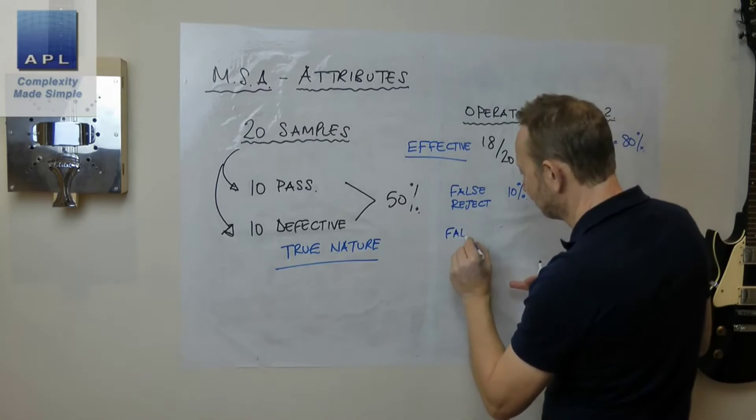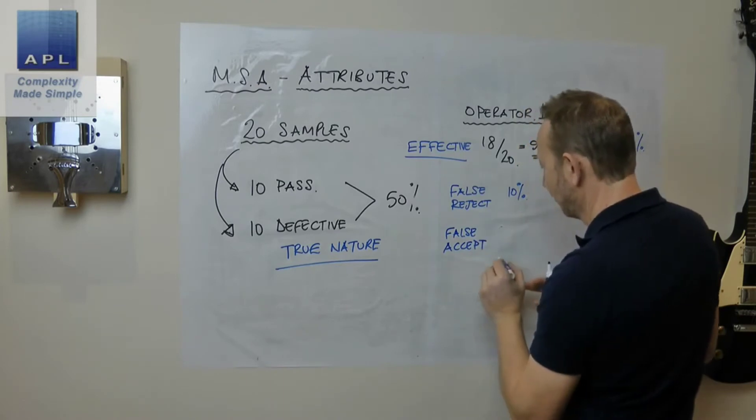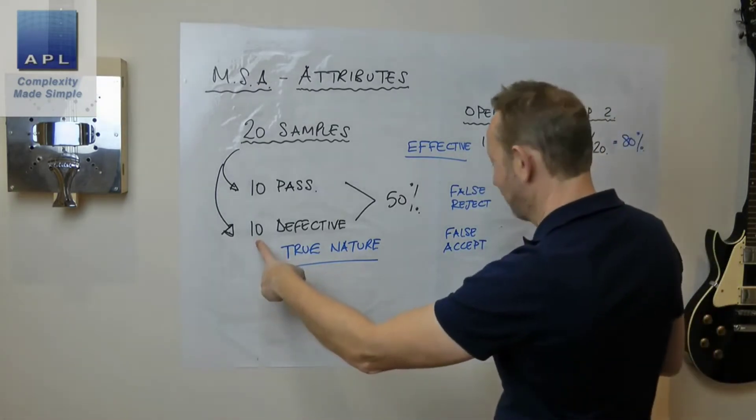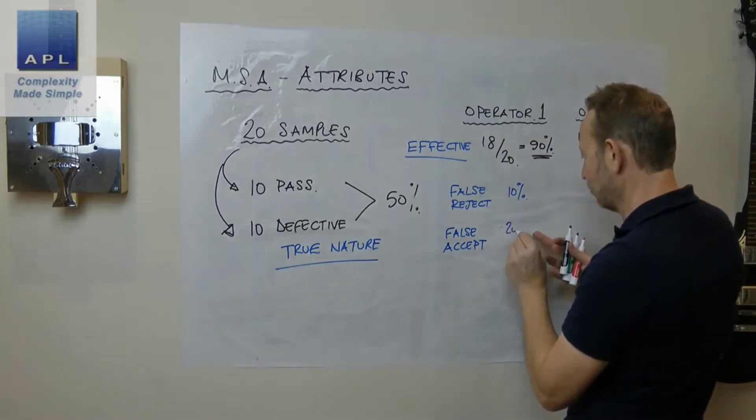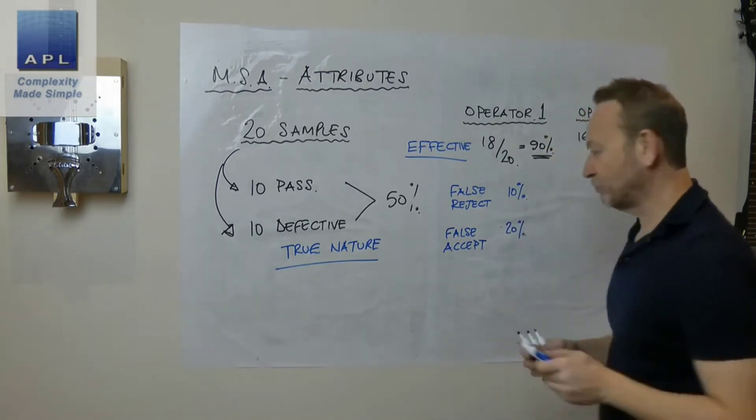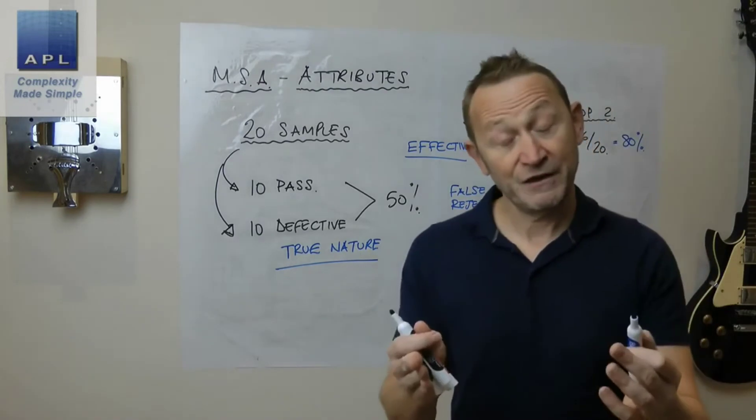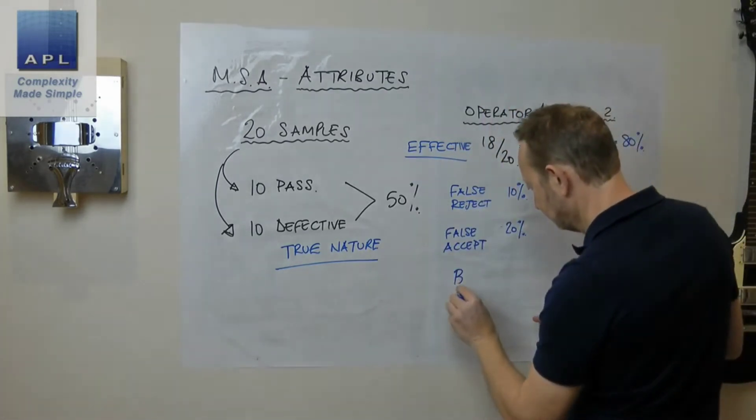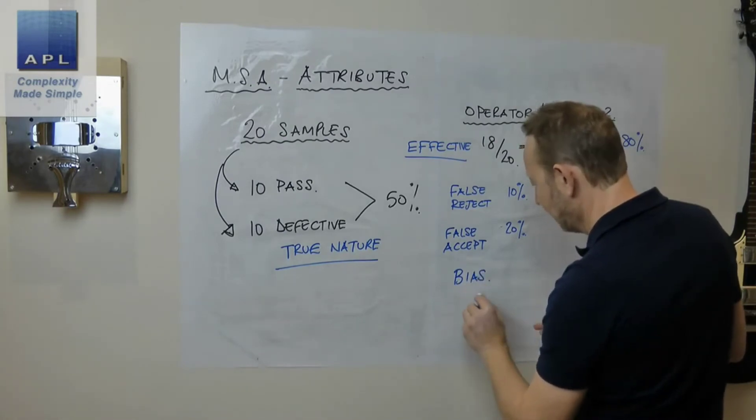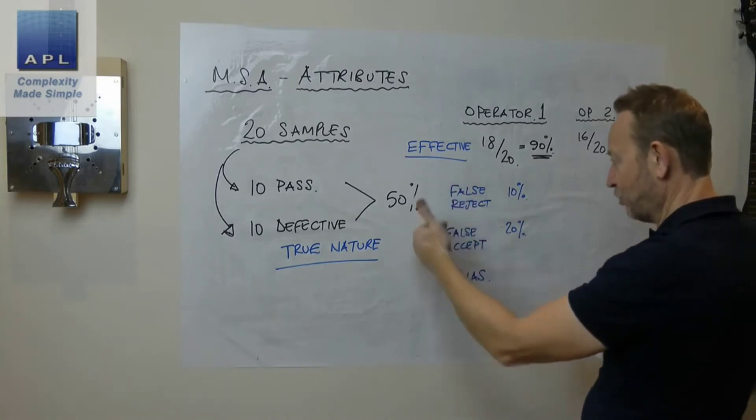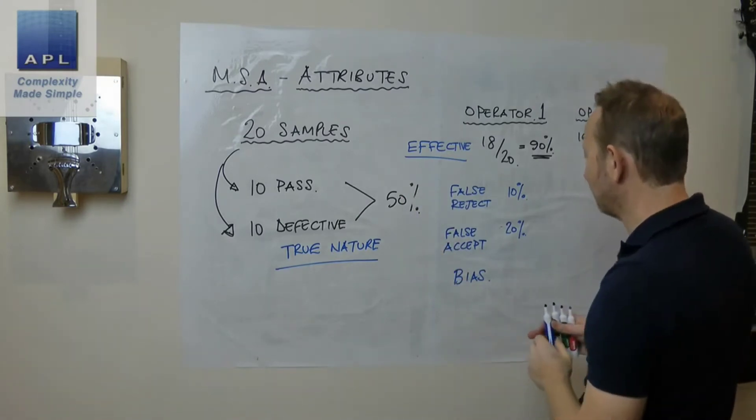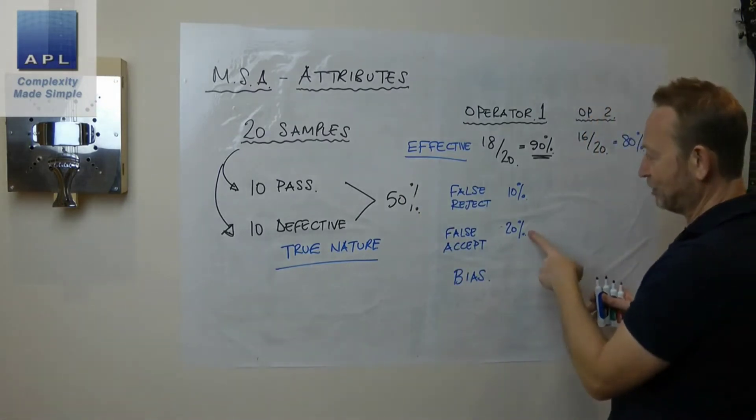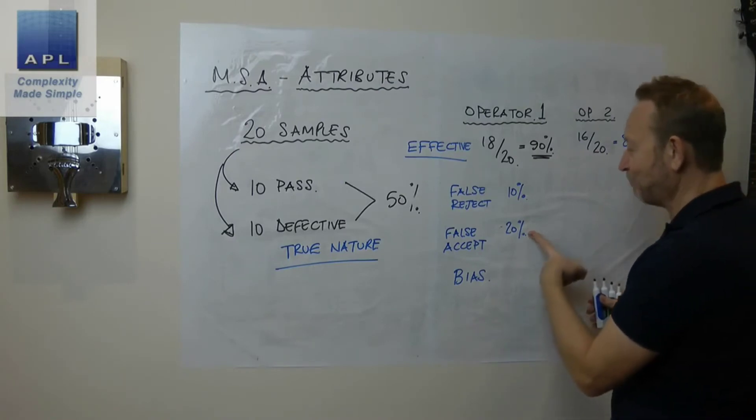Then you're going to get the opposite of that, false accepts. The same thing, we look at how many mistakes have got made with these parts. Let's say two have got made in that case, so there's a 20% chance of a false accept. Then the final number that you work out is the bias. The bias is which way are we biased here, are we too tight or are we too loose? You can see here that we're accepting more mistakes, so we're actually too loose.